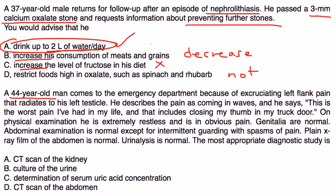Second question. 44-year-old man comes to the emergency department because of excruciating left flank pain that radiates to his left testicle. He describes the pain as coming in waves and says, 'This is the worst pain I've had in my life and that includes closing my thumb in the truck door.' On physical exam, he's extremely restless and in obvious pain. Genitalia are normal. Abdomen exam is normal except for intermittent guarding with spasms of pain. Plain x-ray of the film is normal. UA is normal.